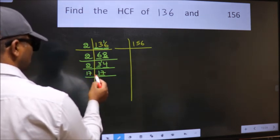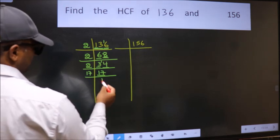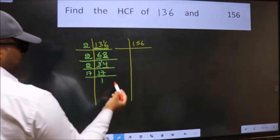Now 17 is a prime number, so 17 times 1 is 17. The other number is a prime number.